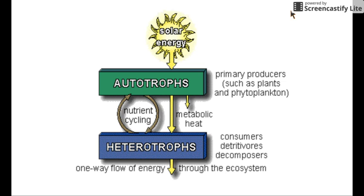As we can see from the direction of the arrows, there is a one-way flow of energy through the ecosystem — from the sun into the autotrophs, where they convert that energy through photosynthesis into chemical energy. That chemical energy is then passed on to the heterotrophs, which convert it into mechanical energy in order to move, as well as into heat and sound energy, which is then given off into the ecosystem.